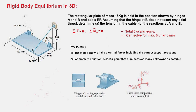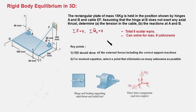When a rigid body is in equilibrium, two conditions have to be satisfied. The first is the net force acting on the body should be zero, and the net moment about an arbitrary point A should also be equal to zero. These two are vector equations and they are equivalent to six scalar equations — three for the force and three for the moment.